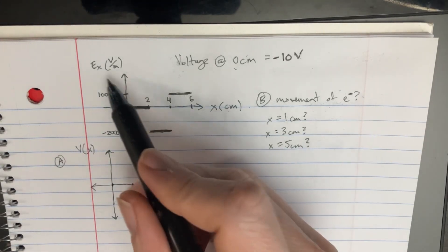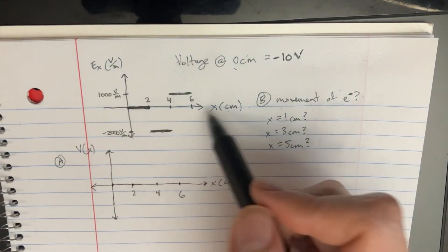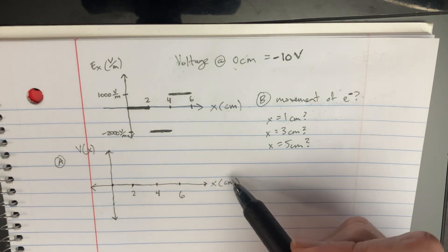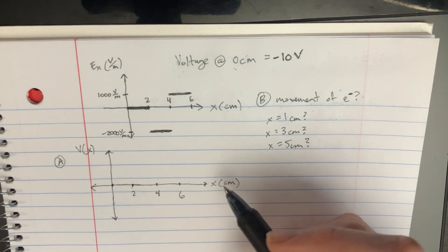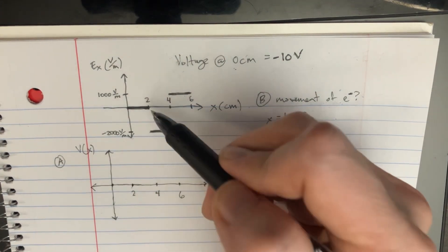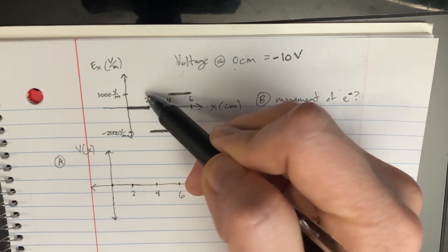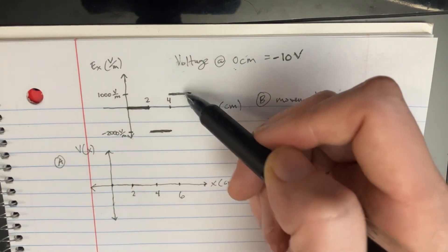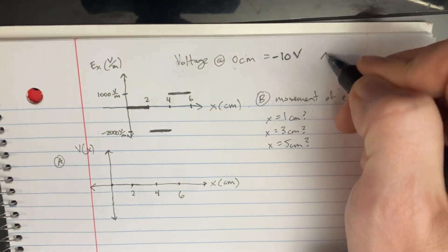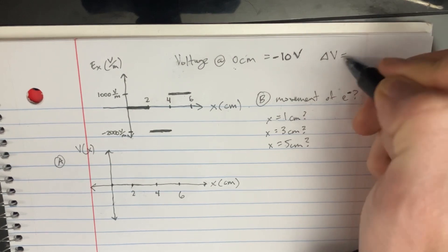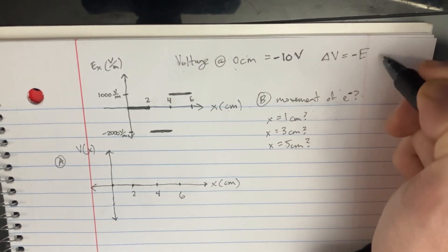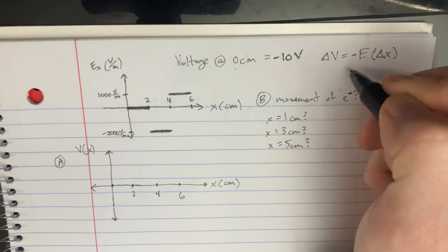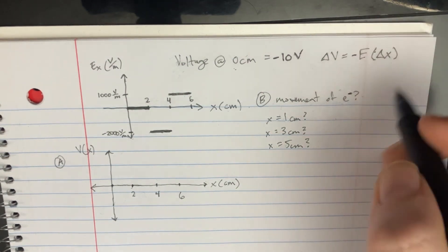In this problem, we're given the graph of the electric field and we're asked to make a graph of the voltage. In order to do this, we have to ask ourselves if there's any slope to these electric fields. Because there aren't any slopes, we don't have to use the integral. We can actually simplify the equation down, which would be a little bit easier than doing the integral.